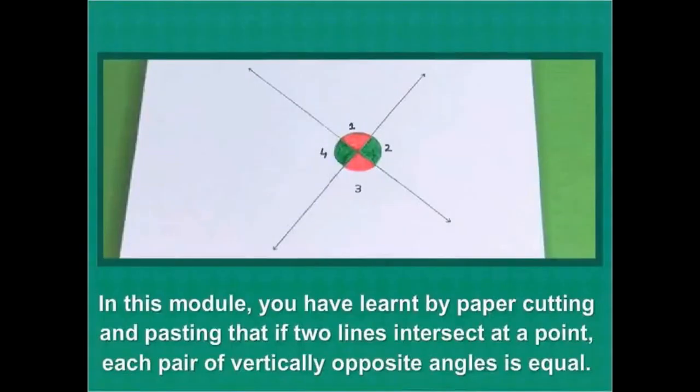In this module you have learnt by paper cutting and pasting that if two lines intersect at a point, each pair of vertically opposite angles is equal.